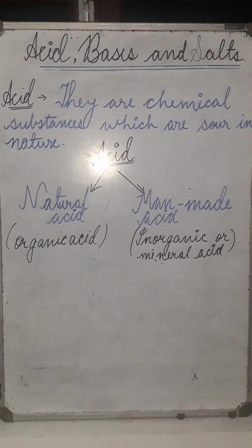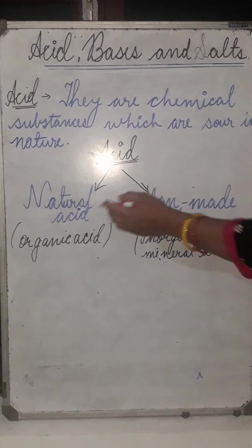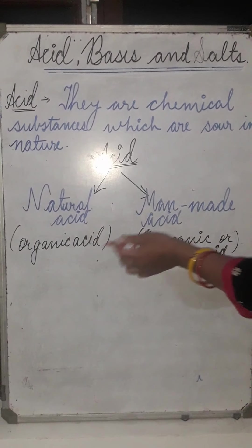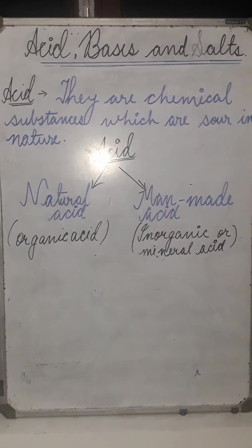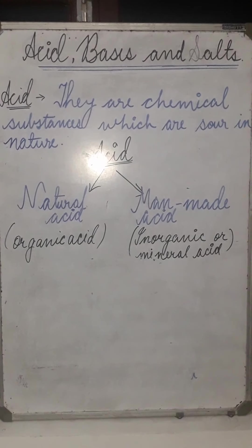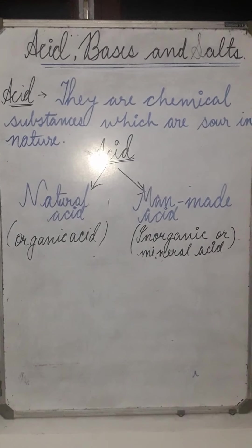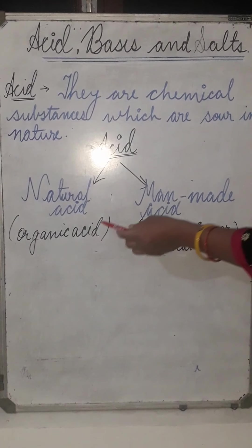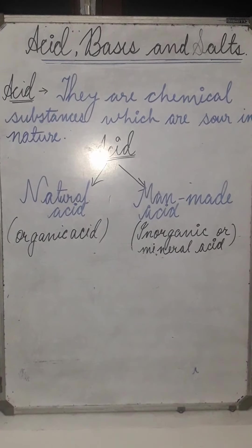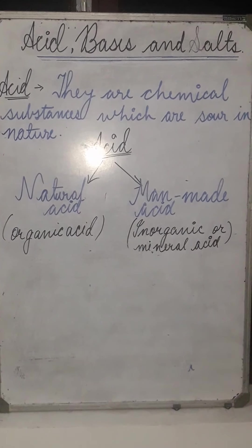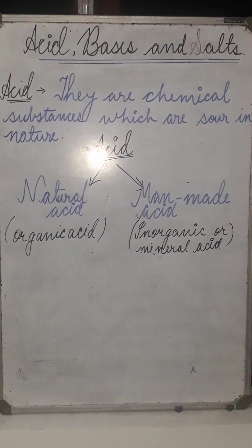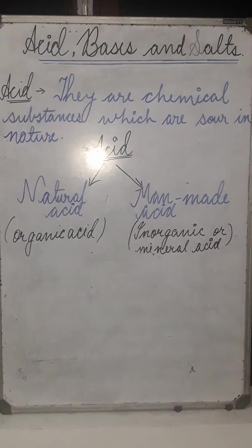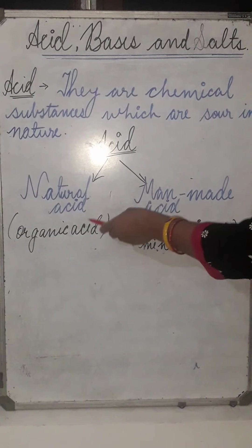Now, how are acids classified on the basis of their sources? I have already told you: natural acid and man-made acid, or organic acid and mineral or inorganic acid. Natural acids are less corrosive and are weak acids. Examples of man-made acids are HCl (hydrochloric acid), HNO3 (nitric acid), and H2SO4 (sulfuric acid). These are also classified as strong acids.